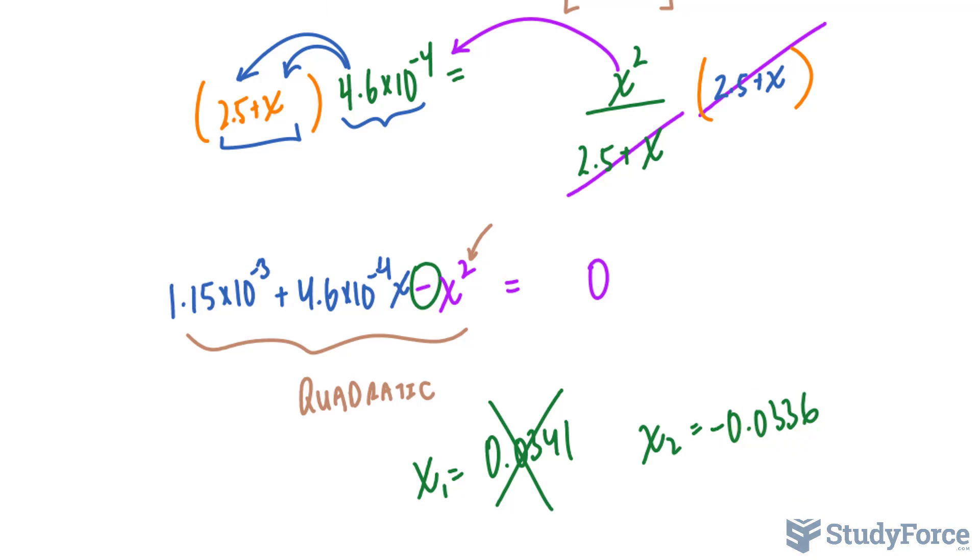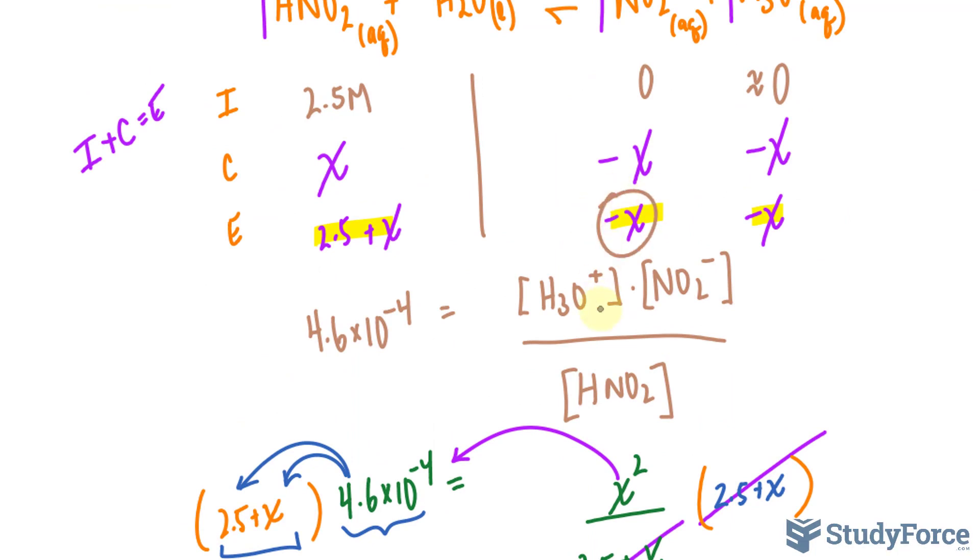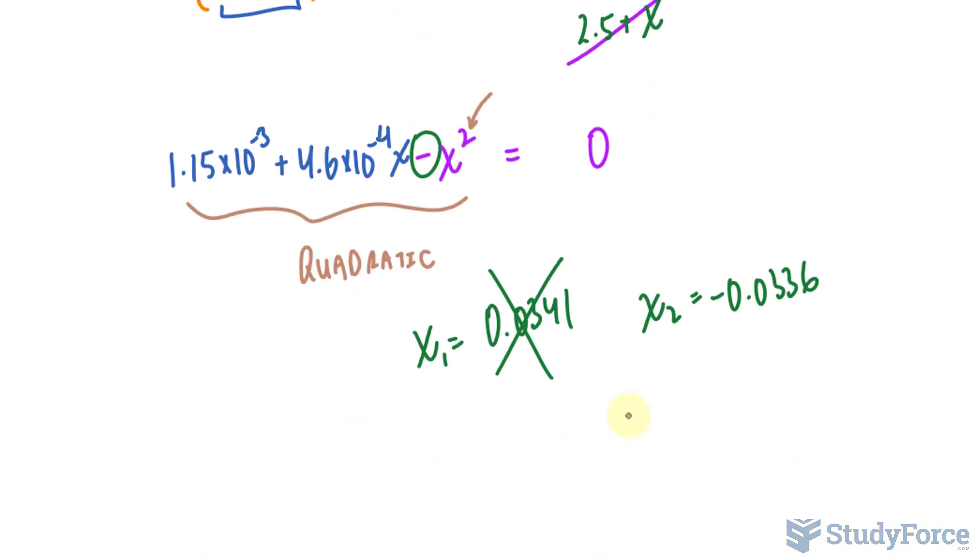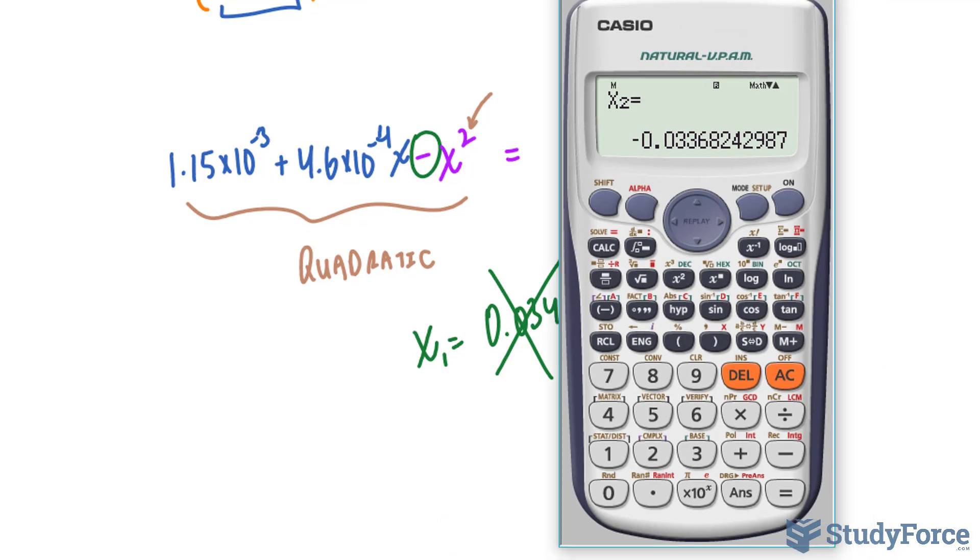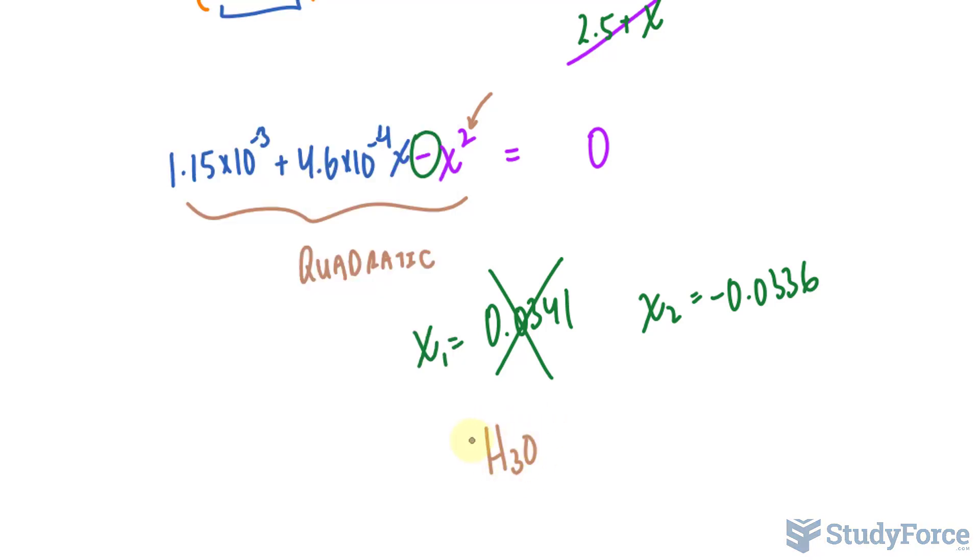I'm going to accept this one only because if you substitute that number back into this expression, negative X, you end up with a positive output. So pretend you multiply this number by negative 1. You get positive 0.0336. So let me write that down. The hydronium concentration is positive 0.0336.